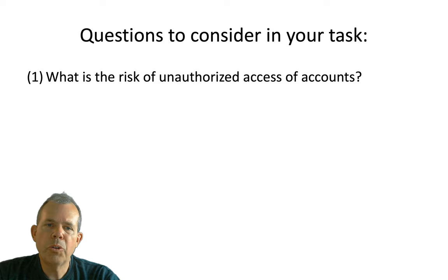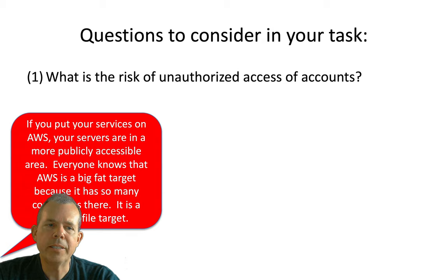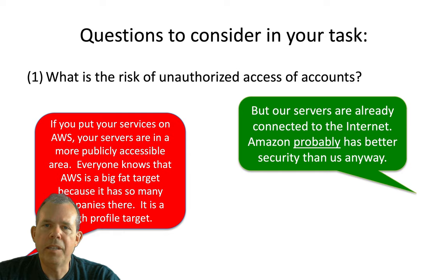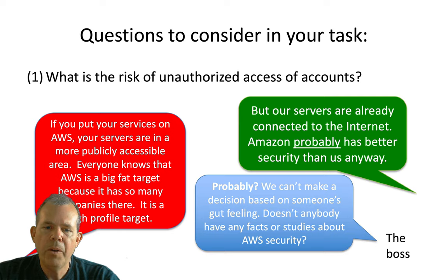What kind of risk should we consider? Is the risk of unauthorized access into our system greater with the cloud or less? One argument: AWS is in a more publicly accessible location — everyone knows it's a big fat target, high profile and likely to get hacked. The counter-argument: our servers are already connected to the internet, so we're not exposing them to something new, and Amazon probably has better security than our little back room. The boss says: we can't make decisions based on gut feelings — go get some facts and numbers.